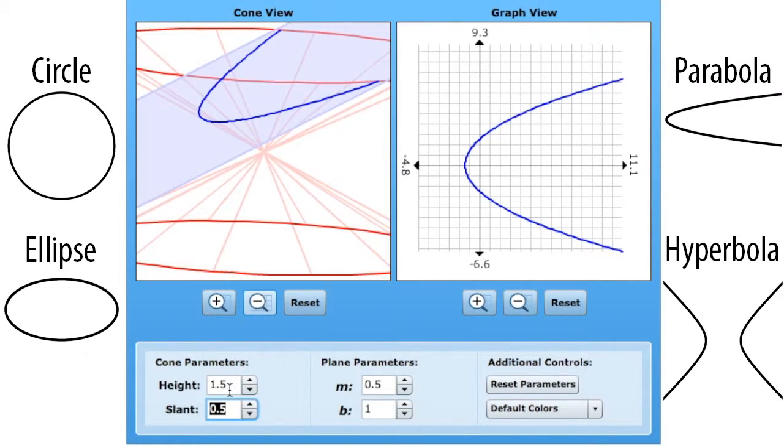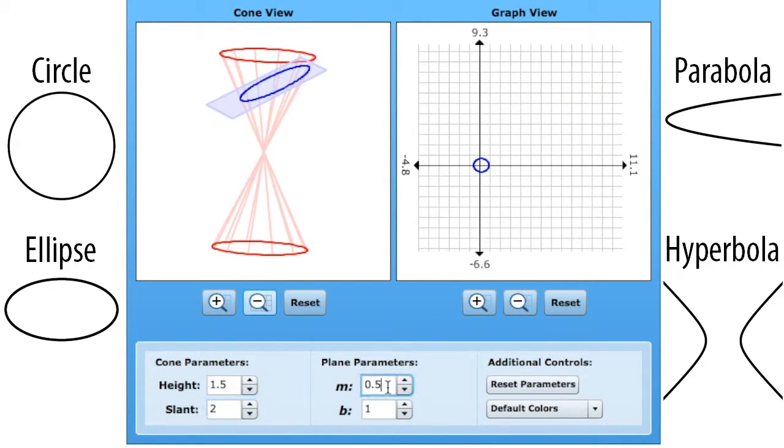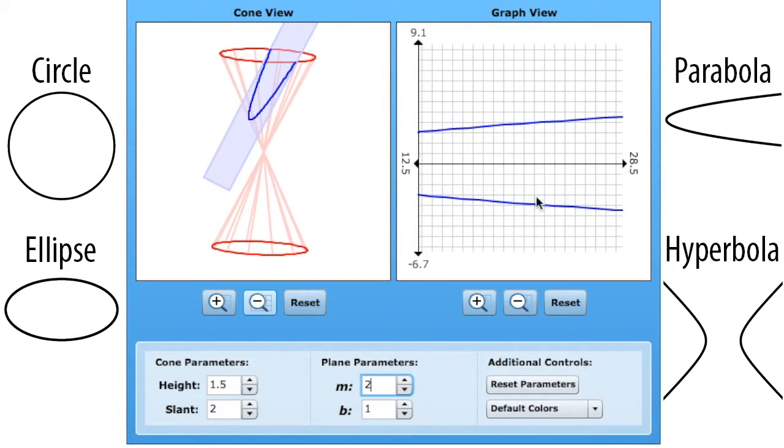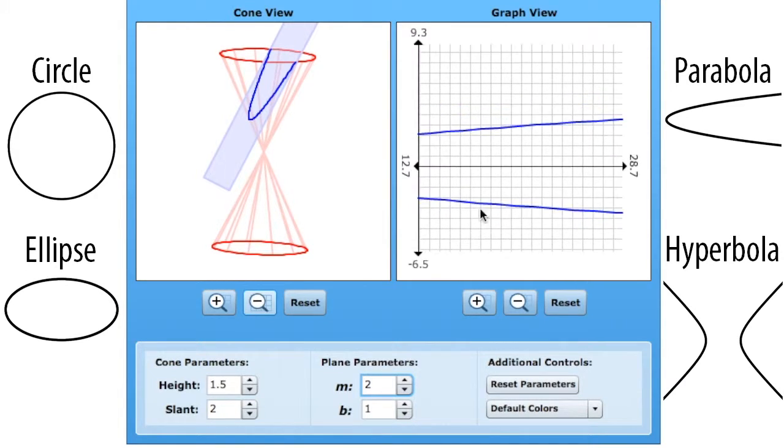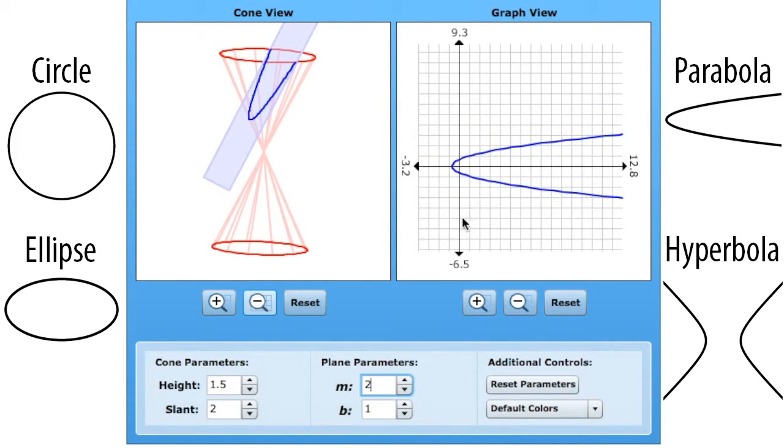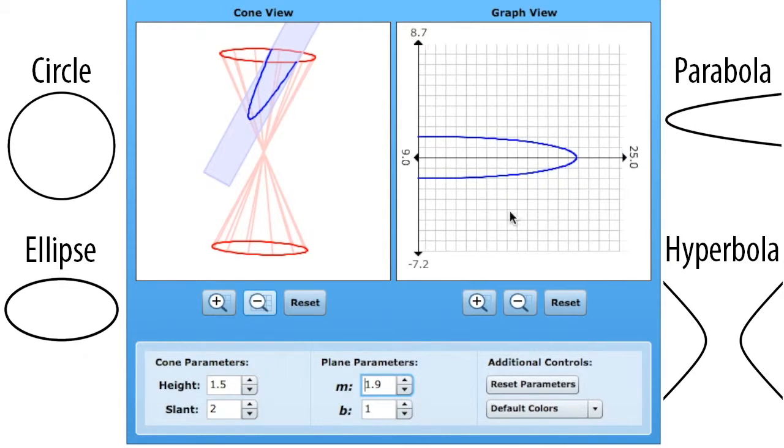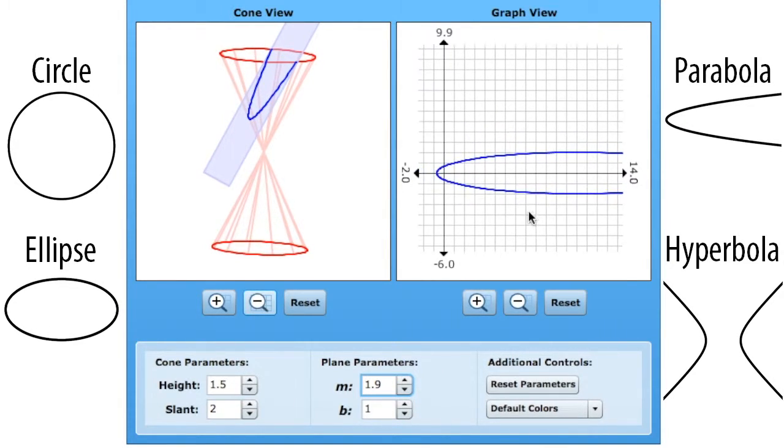So, it seems to me that I have a parabola when the slope of the plane and the slant of the cone are the same. Let's see if it's true for it being steeper one more time. So, if I have a slant of 2 and a slope of 2, do I have a parabola? It sure looks like it. It doesn't look like it's coming back down. So, let's make this just slightly less steep. And is this an ellipse? Yes, it is. It'll eventually close back up.